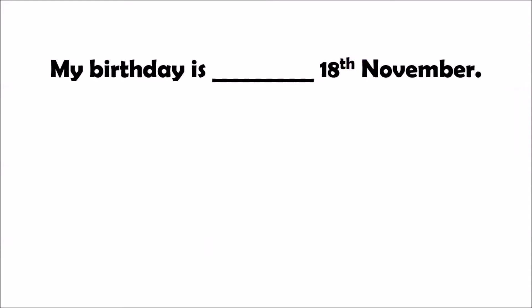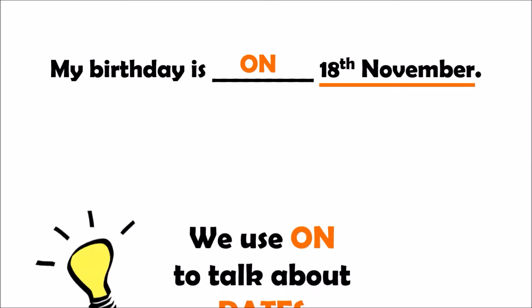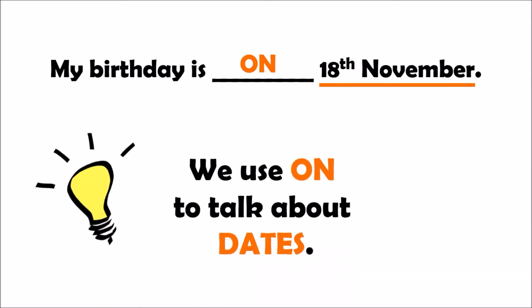What about this one: my birthday is on the 18th of November. Pay attention, because here it's not just the month — I have the exact date. So what do you think — in, on, or at? Very good. We are going to say: my birthday is on the 18th of November. We use 'on' to talk about dates, the exact date.